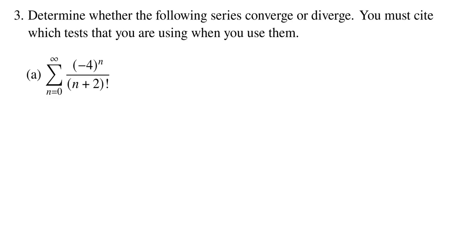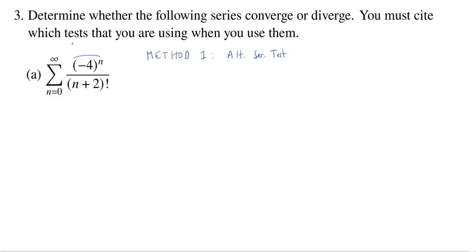The very first way is the one that, as I was looking through the exams, most people wanted to use first, which is the alternating series test. So method one will be the alternating series test. What almost certainly gave it away is this minus 4 to the n. We could break this up as minus 1 to the n times 4 to the n. And you see minus 1 to the n — that's what we called an alternator. As soon as you see an alternator, you might consider checking to see if you can use the alternating series test.